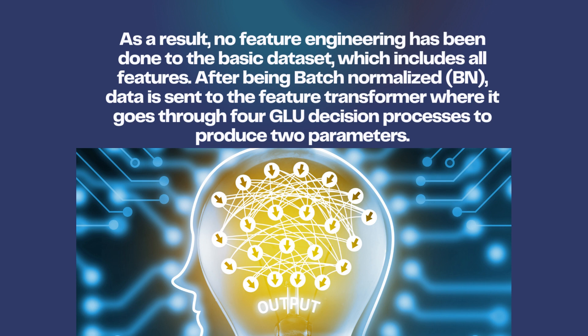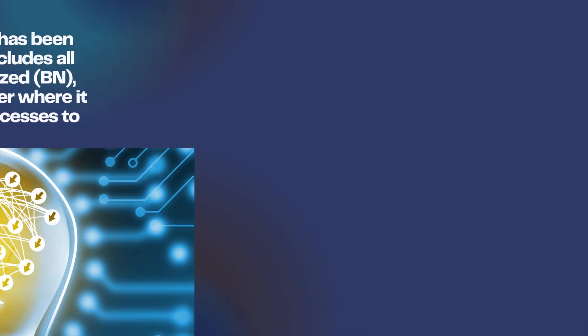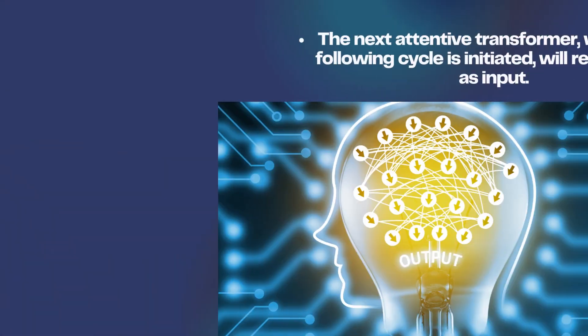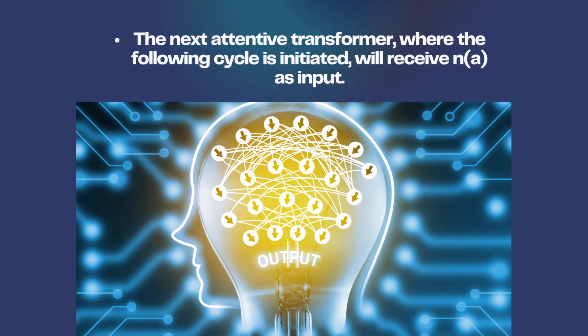After being batch normalized (BN), data is sent to the feature transformer where it goes through four GLU decision processes to produce two parameters. In the case of regression or classification, the output decision N, D — which represents the prediction of continuous numbers or classes — is provided. The next attentive transformer, where the following cycle is initiated, will receive N, A as input.